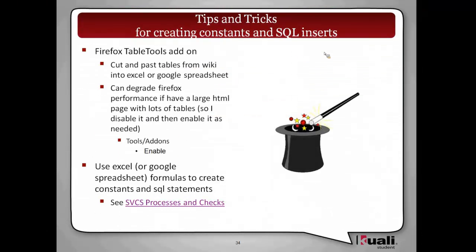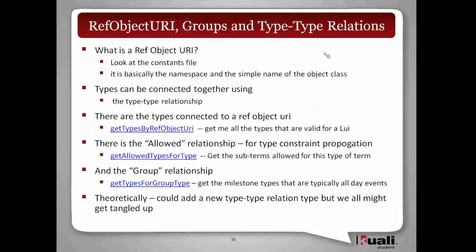There's another piece that's sort of missing that I need to describe — the groups and the type-type relations. What we realized when doing services was that very often the type of one object will constrain, by some business rule, which types of another object it can be related to. In order to enforce or define that constraint, we said why don't we define type-type relations? There's a table in the type service that says these are the allowed type-type relations.